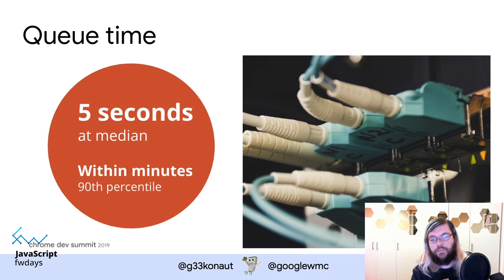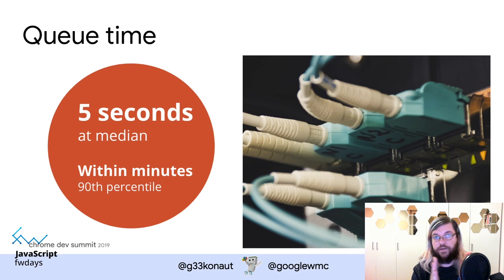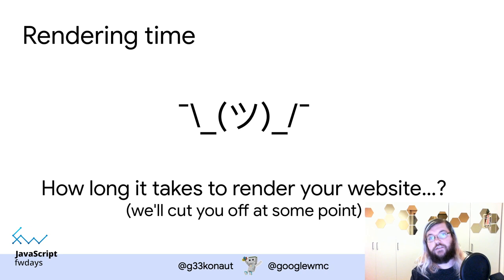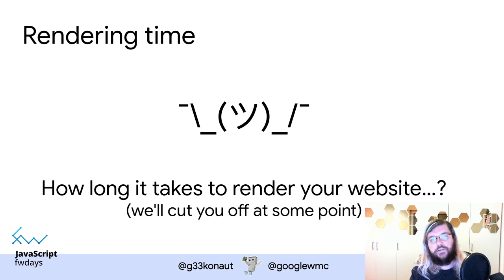We measured and found that queue time at median is five seconds, reaching the 90th percentile within minutes — so we're quite fast at making pages available for rendering. For render time, we can't make specific statements because it depends on how fast your website renders. If it's fast, we're done fast. If it takes a minute, it takes a minute. There is no 'rendering budget' — only a cutoff after some time. If your users would be frustrated by load time, Googlebot will have the same problem.